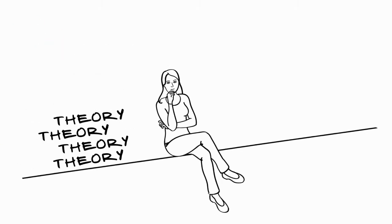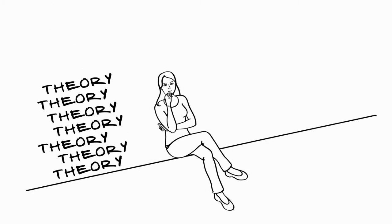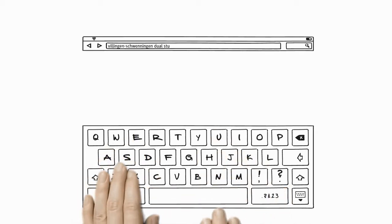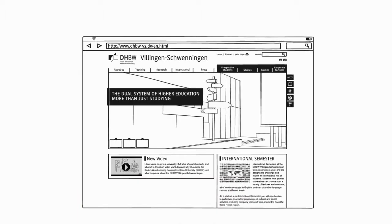Lillian knows that she definitely doesn't want a purely theoretical degree course. So she started looking around. She's looking for something practical to do, something tangible, real life. And she finds it.